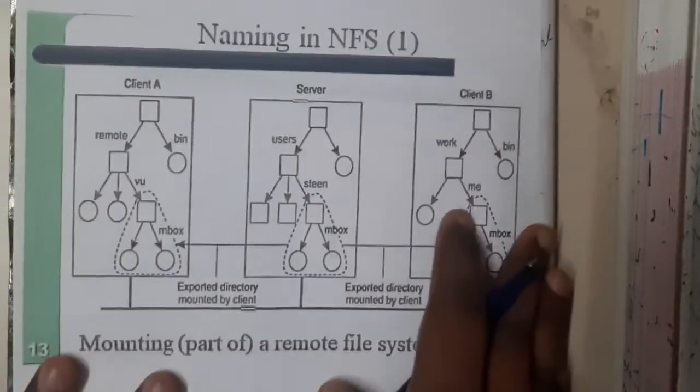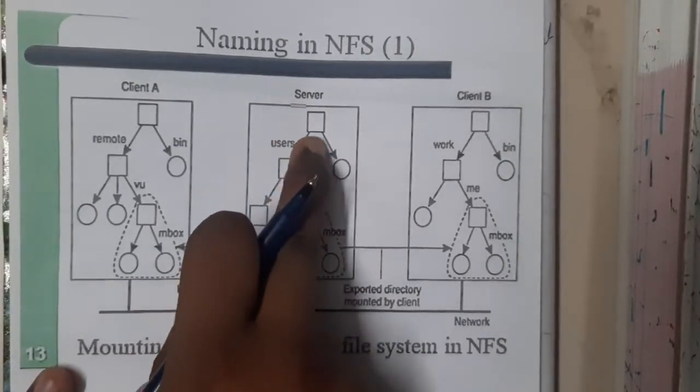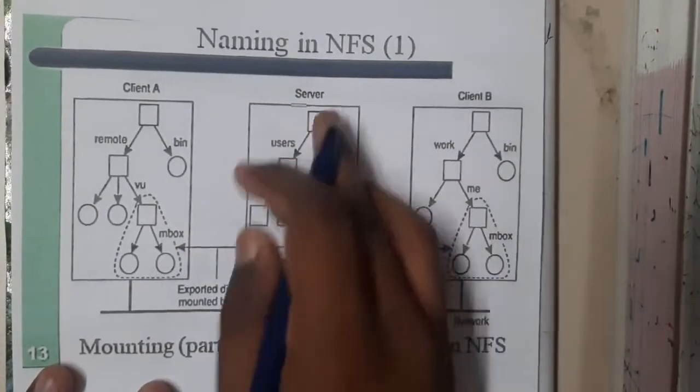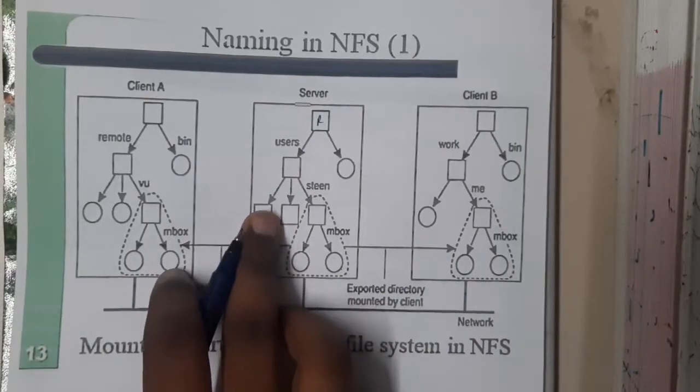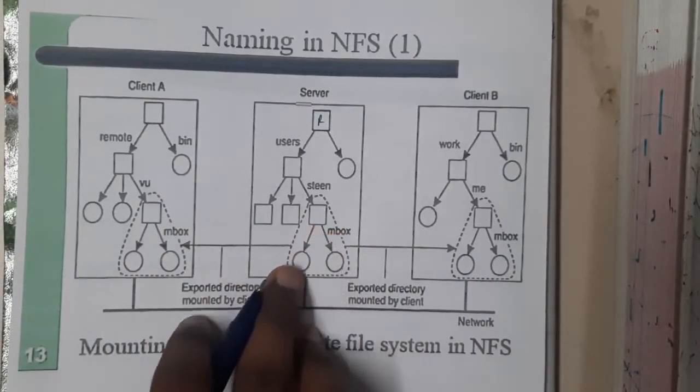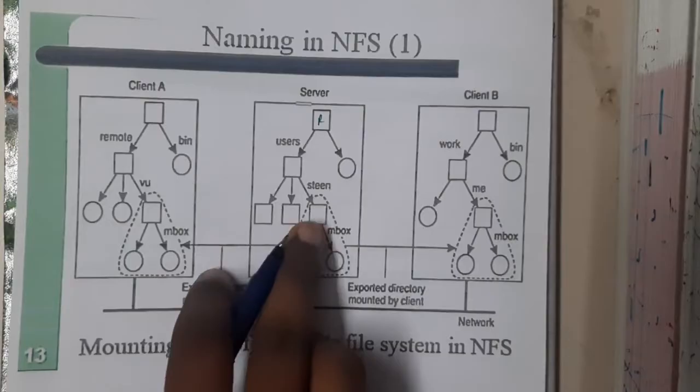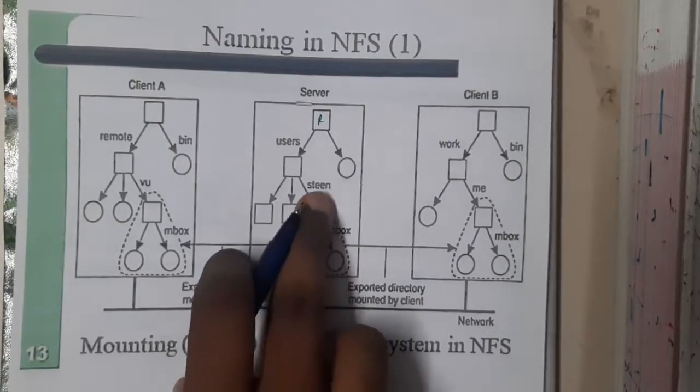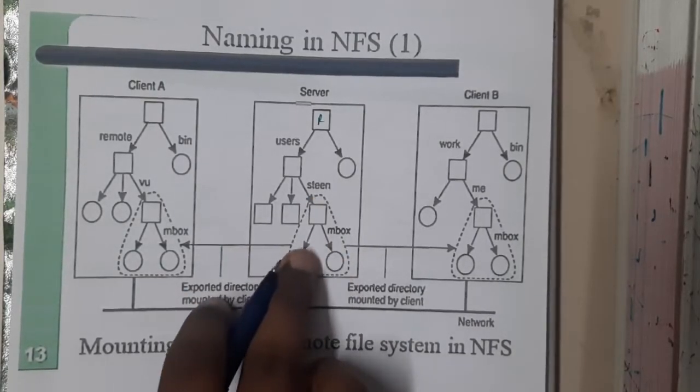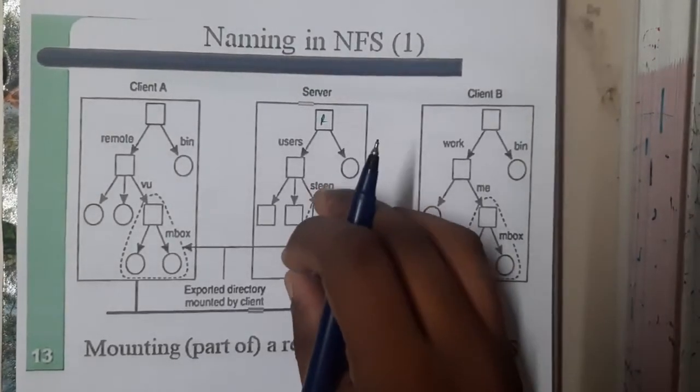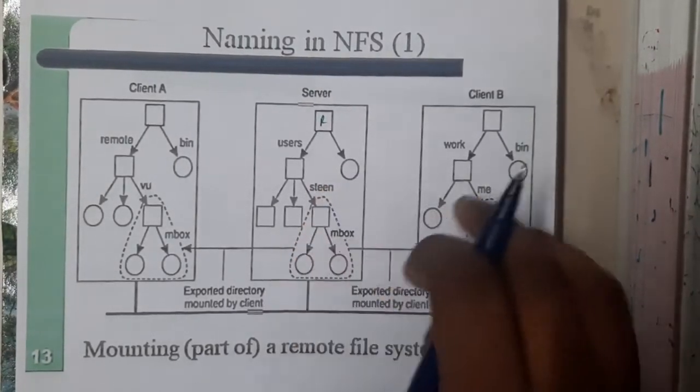This is the first type of mounting. So if you notice here, the server is having the file system in this way. Basically assume this as a root, inside root he is having users, inside users he is having multiple users. And now he wants this particular data, so inside stellen he wants this mailbox and some other data.